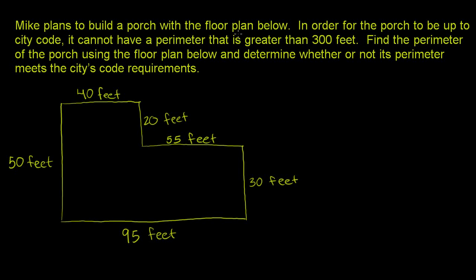Mike plans to build a porch with the floor plan below. In order for the porch to be up to city code, it cannot have a perimeter greater than 300 feet. Let me underline that. It cannot have a perimeter greater than 300 feet. Or another way to think about it, the perimeter has to be 300 feet or less.